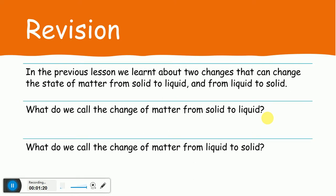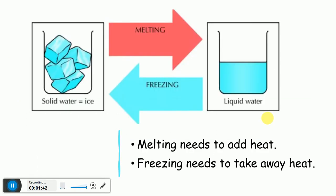And the change of matter from liquid to solid — like putting water inside the freezer to make it ice — this process is called freezing. It needs a very low temperature to turn it from liquid to solid. This drawing shows the melting and the freezing; they are opposite to each other. Freezing turns liquid water into solid water, which is ice.